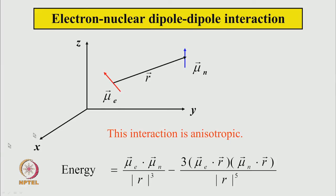In an XYZ coordinate system, this is the direction of the magnetic dipole moment and this is the distance between the two dipoles. The energy of these two magnetic dipoles depends on the orientation of the two dipoles — specifically, their relative orientation. The energy depends not only on the magnitude of the dipoles but also on the distance between them and the orientation of μ with respect to R. This interaction is direction-dependent and is called an anisotropic interaction.